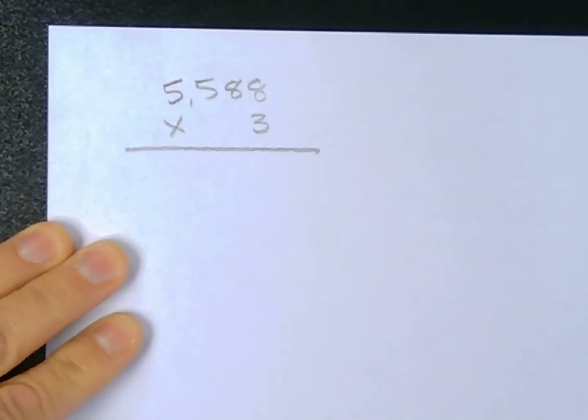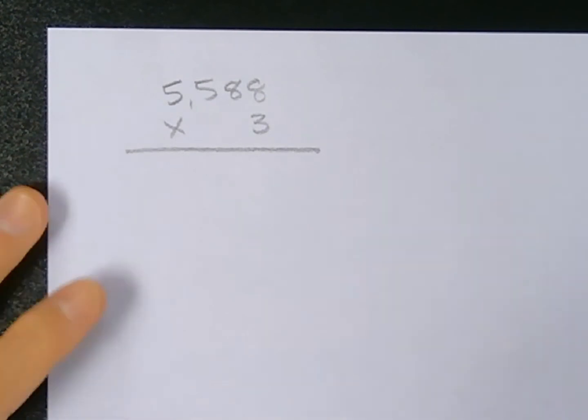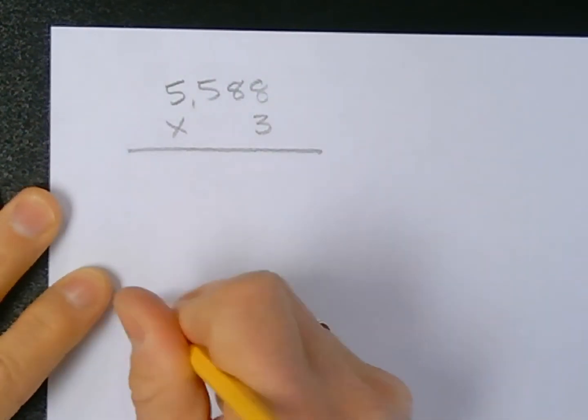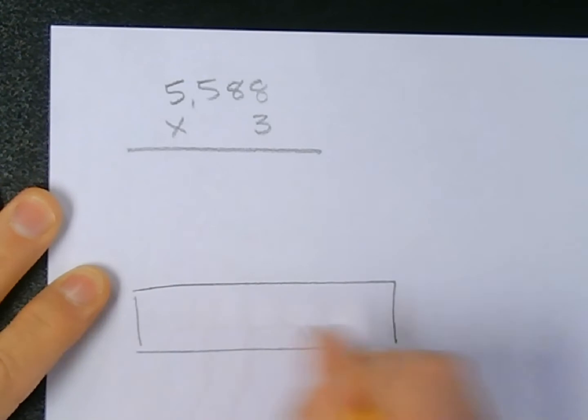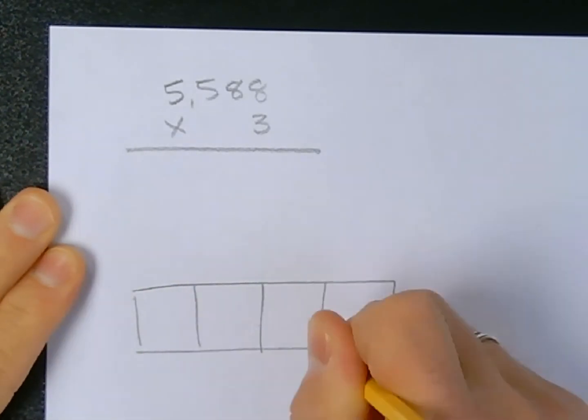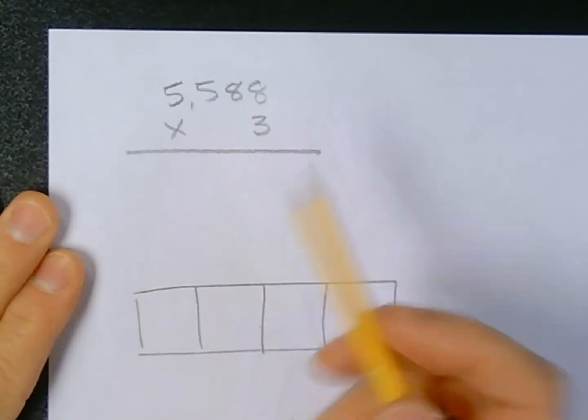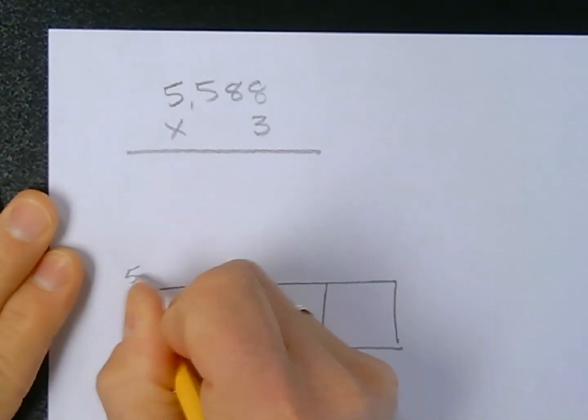This is another problem that requires multiple steps or multiple calculations, so I can use partial products, partitioning rectangles, or lattice to solve this. I think today I'm going to use partitioning rectangles. That means I have to make a pretty long rectangle with 4 parts or 4 boxes because 5,588 is 5 groups of a thousand.